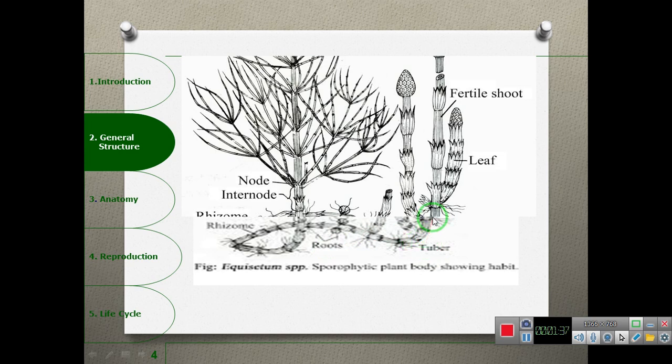The aerial branches, or vegetative part, consist of two types: fertile and sterile branches. Fertile branches produce cones or strobili. The branches have nodes and internodes.